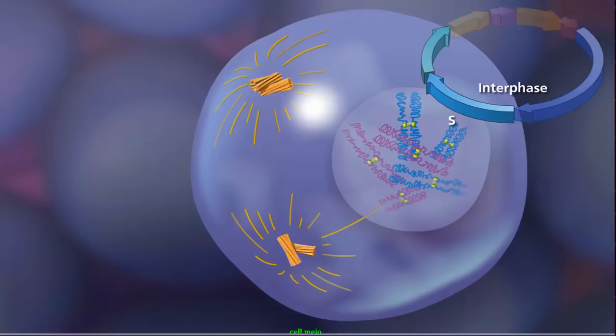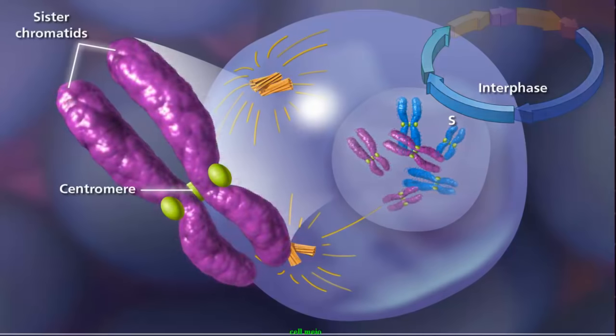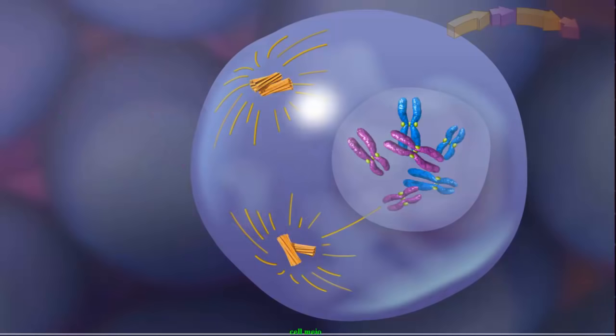Sister chromatids remain attached at the centromere and condense as the cell enters prophase I of meiosis. Up to this point, the cell looks similar to mitosis, but two events occur in meiosis that do not occur in mitosis and lead to genetic diversity.